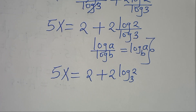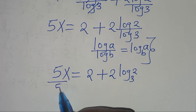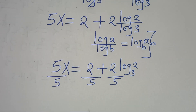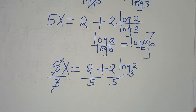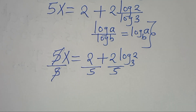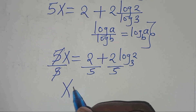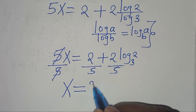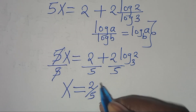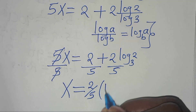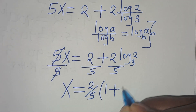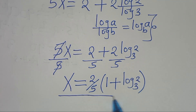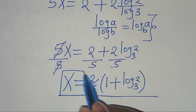The next step is to divide everything by 5, so 5 simplifies, and we can express x equals — since 2/5 is common, we factor out 2/5 — giving x equals (2/5)(1 + log₃(2)). This is the value of x.